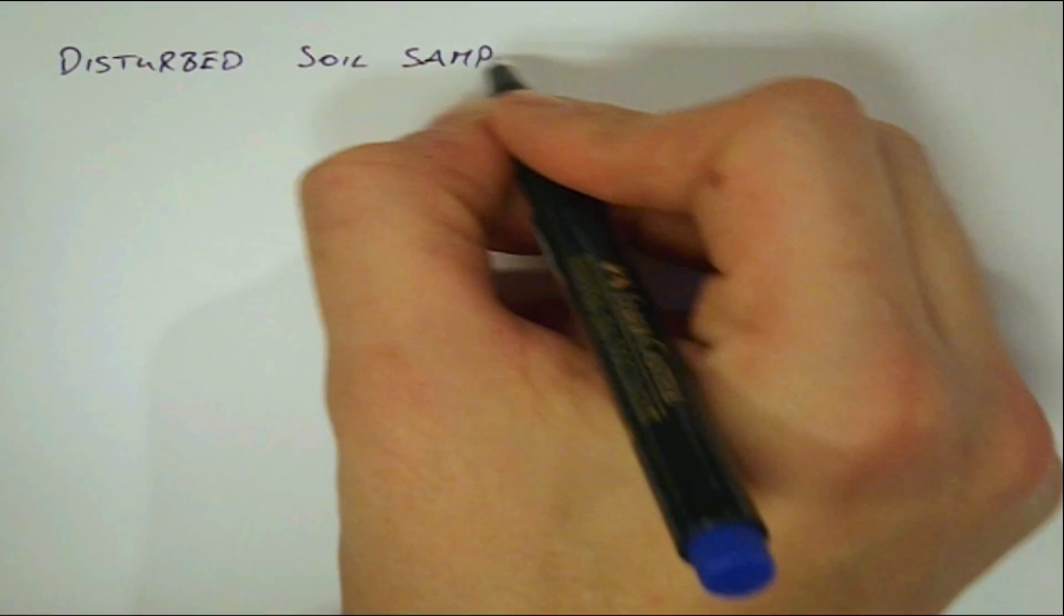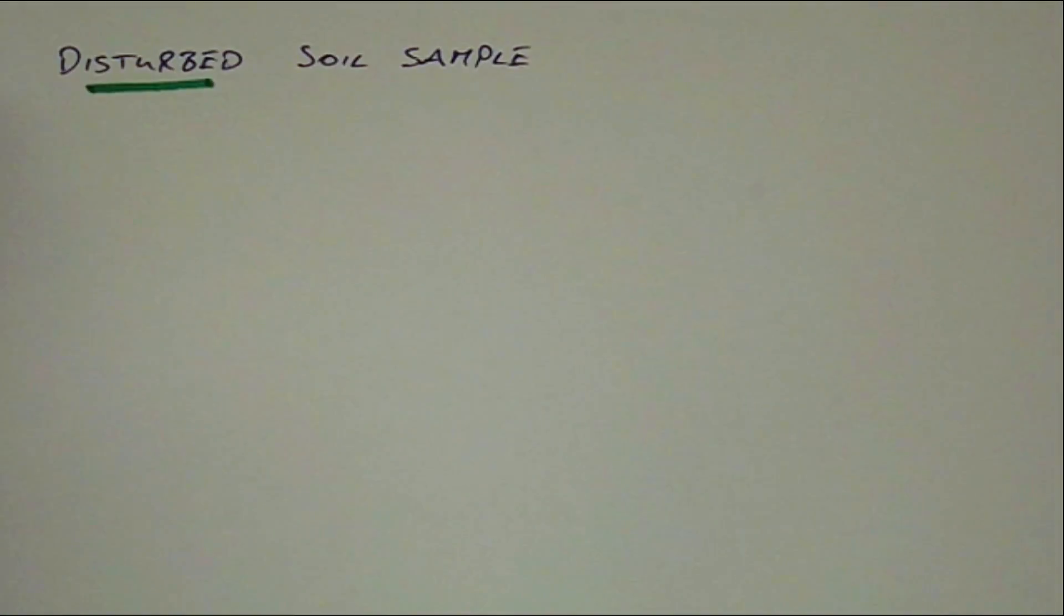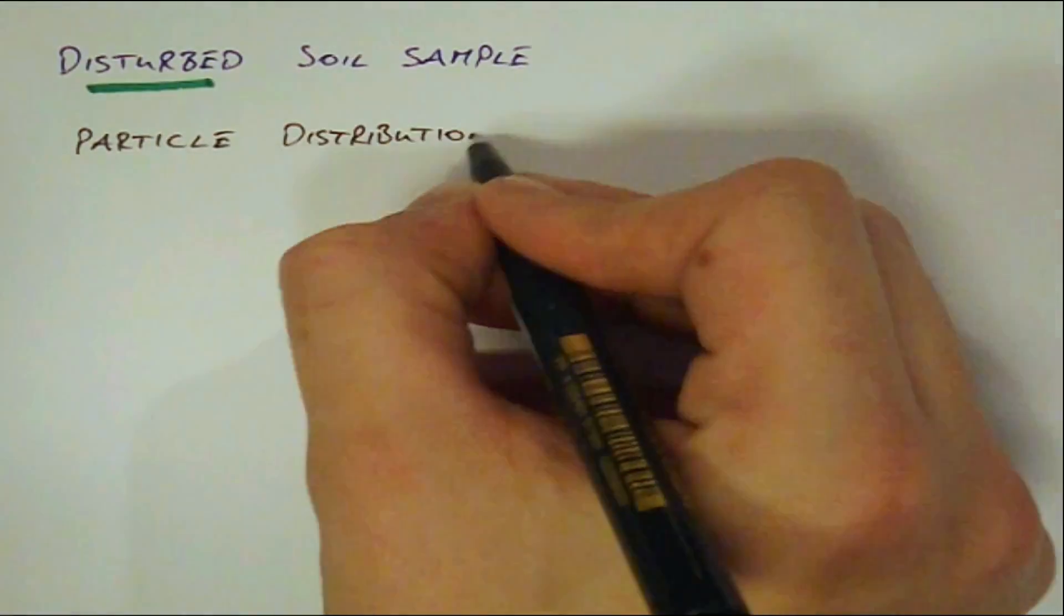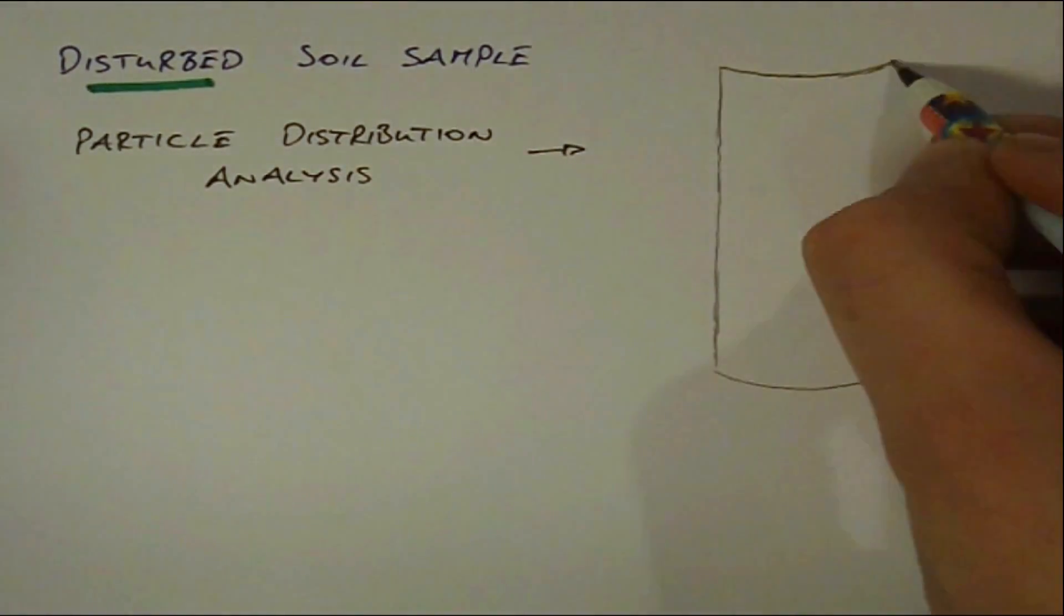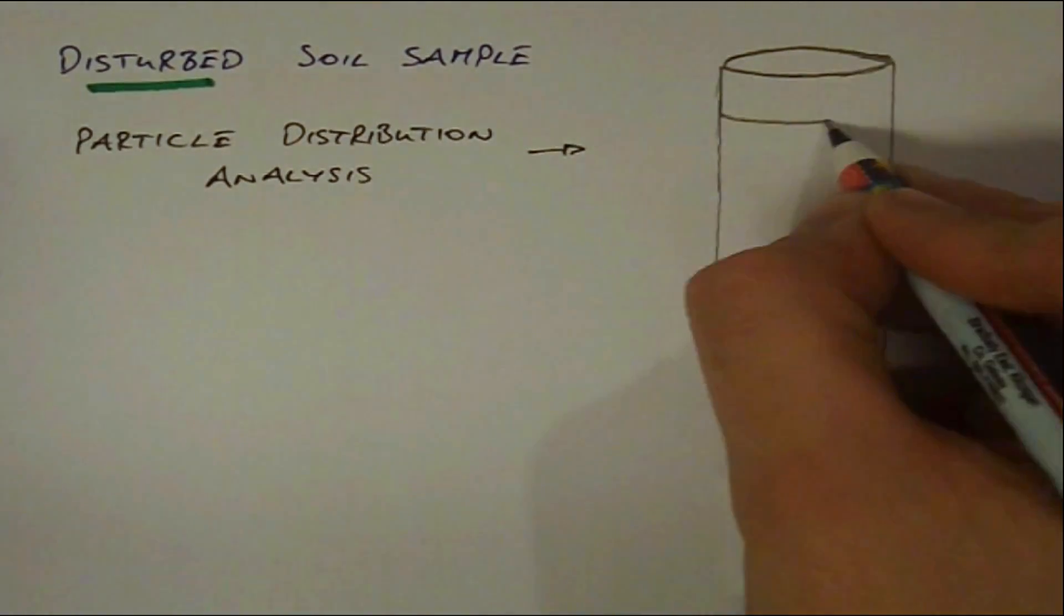The formal soil classification process starts in the laboratory by taking a disturbed soil sample and subjecting it to a particle distribution analysis by pouring dry soil into a nest of sieves.